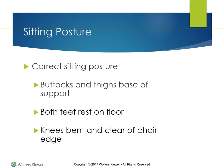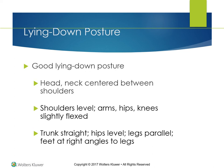Correct sitting posture: the buttocks and thighs are the base of support, both feet rest on the floor, and the knees are bent and clear of the chair edge. Lying down posture: the head and neck are centered between the shoulders, shoulders are level, arms, hips, and knees are slightly flexed, trunk is straight, hips are level, legs are parallel, and feet are at right angles to the legs.